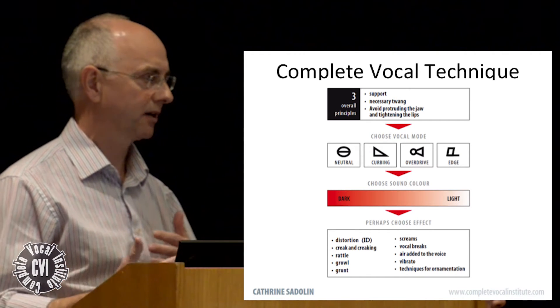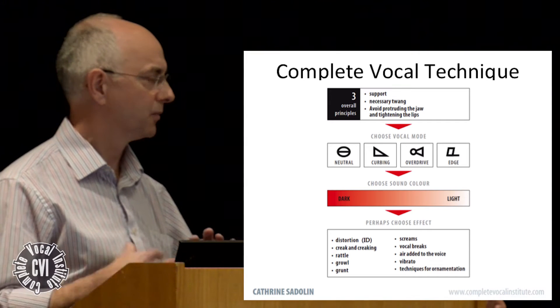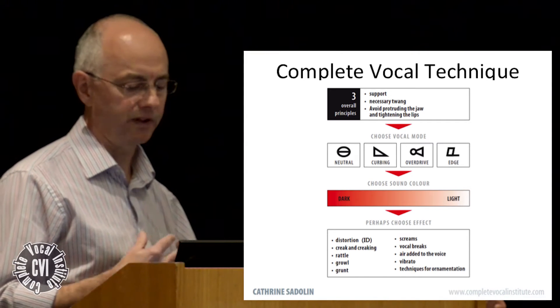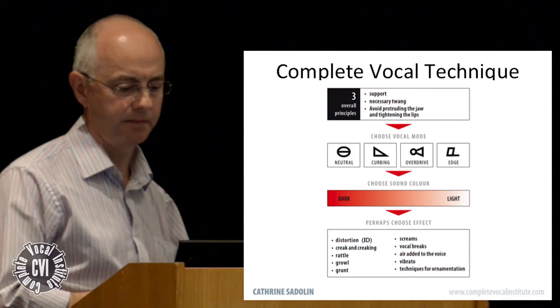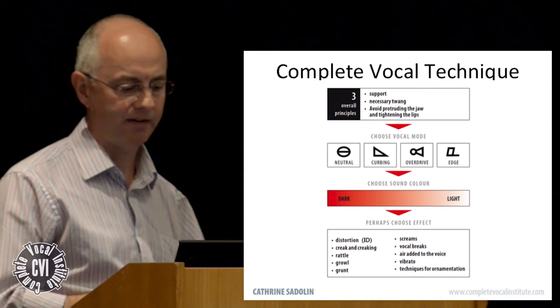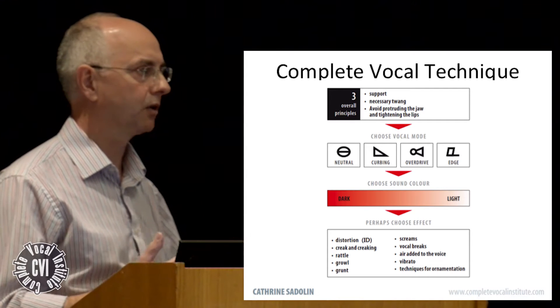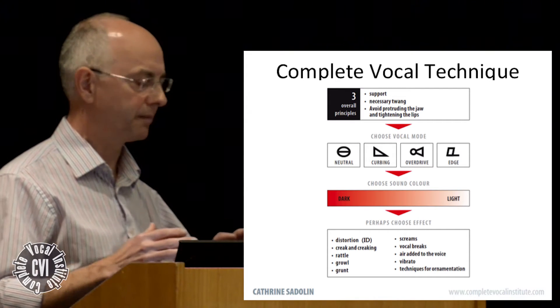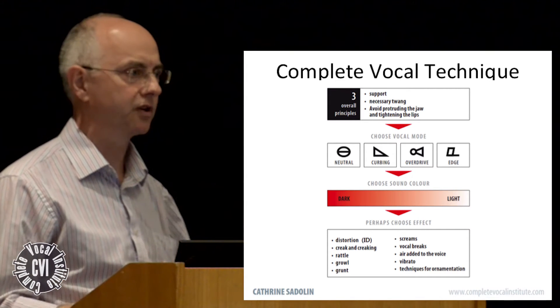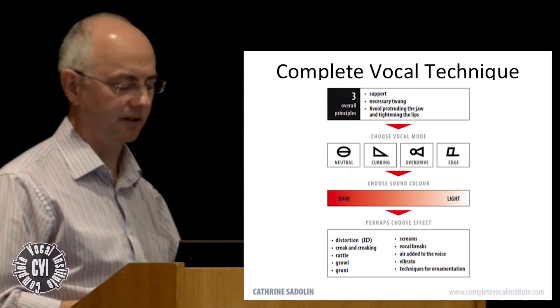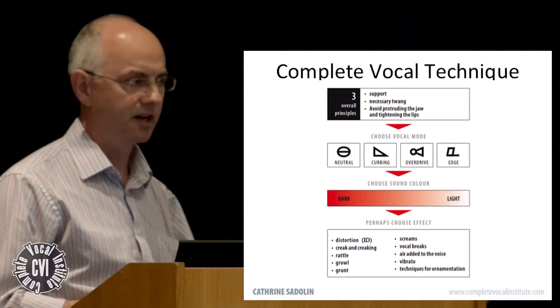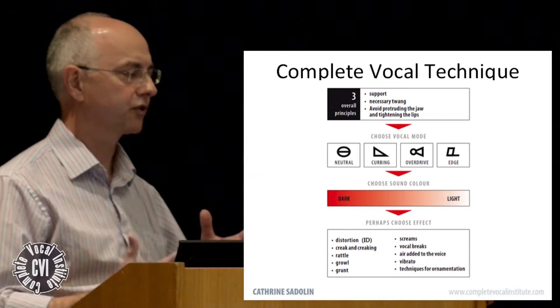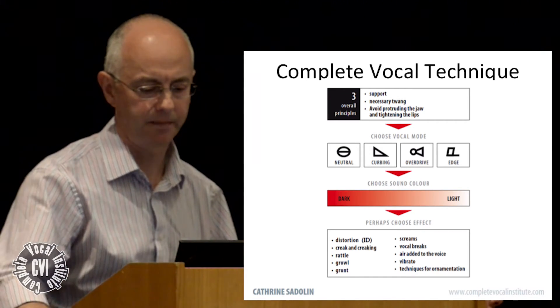You can have a rattle, which involves more the mucosa over the arytenoids; growl, where it's the aryepiglottic folds that are mostly involved; and grunt, where you have the whole of the supraglottis vibrating — we had another example of that last night. And I'm going to focus on distortion.